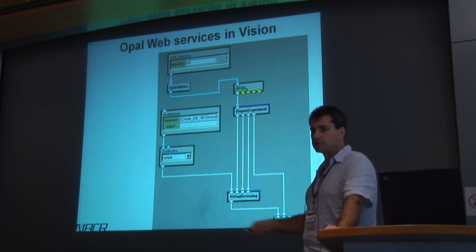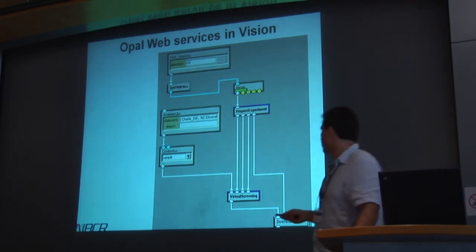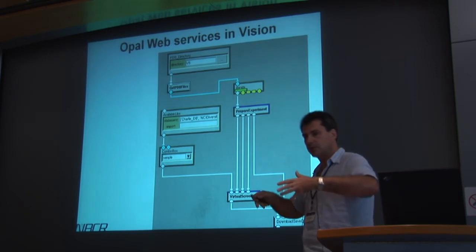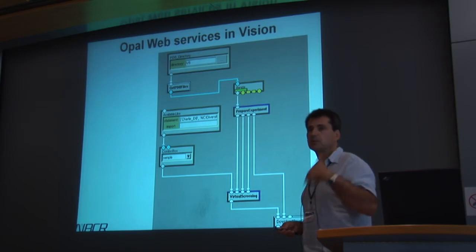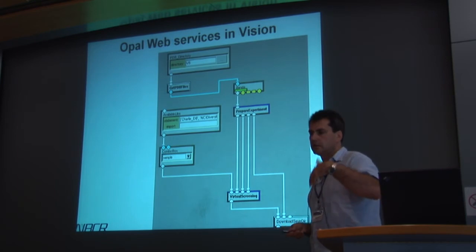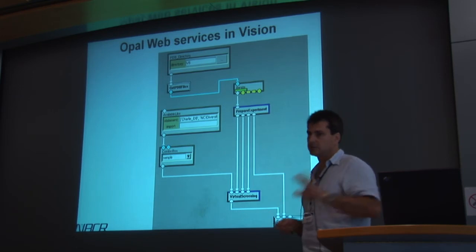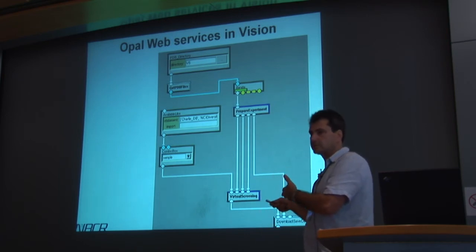The way you specify where things run is by instantiating a virtual screening node discovered on the NBCR resource. The virtual screening is actually a macro network in which receptor preparation has several steps, some of which you might want to bypass. For instance, receptor preparation involves protonating the receptor and computing charges — but if you already have a protonated receptor with the charges you want, you can go inside the network and bypass those steps.